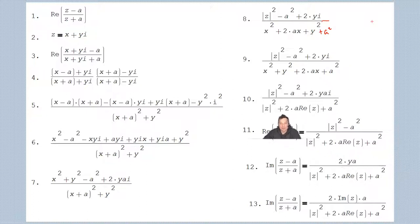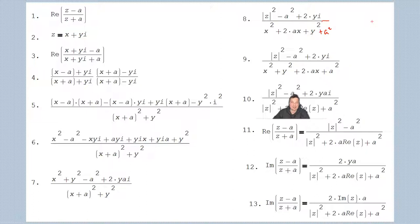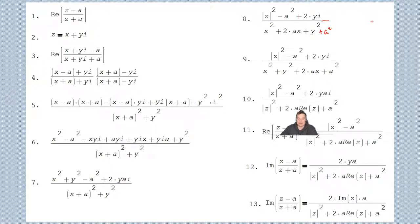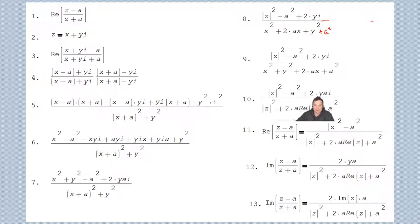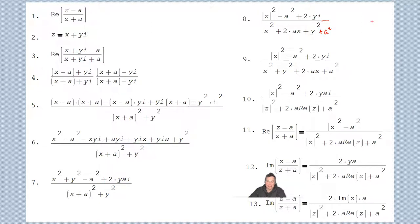So the real part of z minus a over z plus a equals the modulus of z squared minus a squared over the modulus of z squared plus 2a times Re(z) plus a squared — because 2yai has the i next to it, so we take only the part without i from the numerator. The imaginary part of z minus a over z plus a is 2ya over the modulus of z squared plus 2a times Re(z) plus a squared.